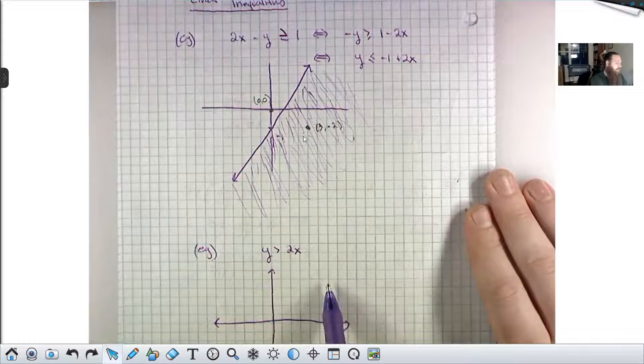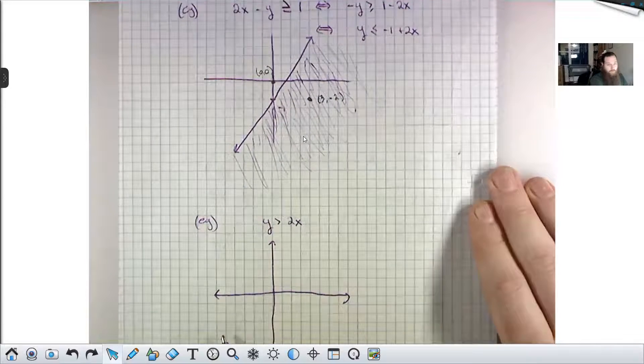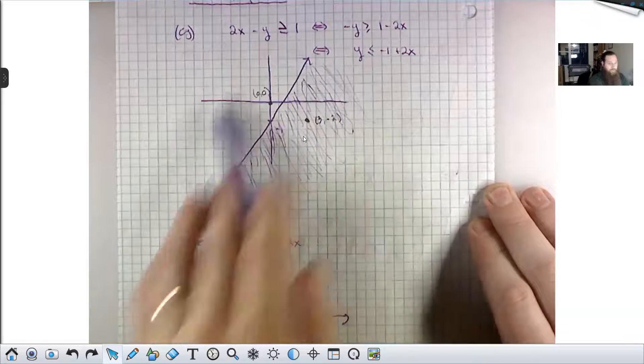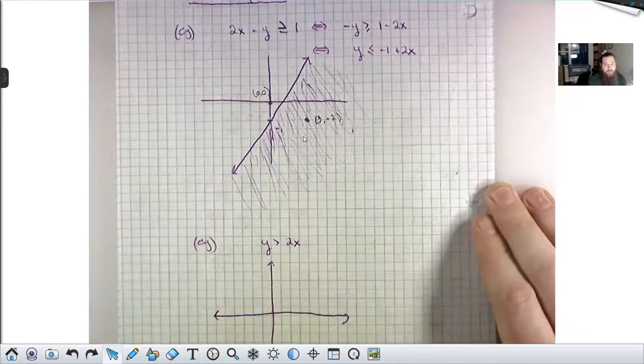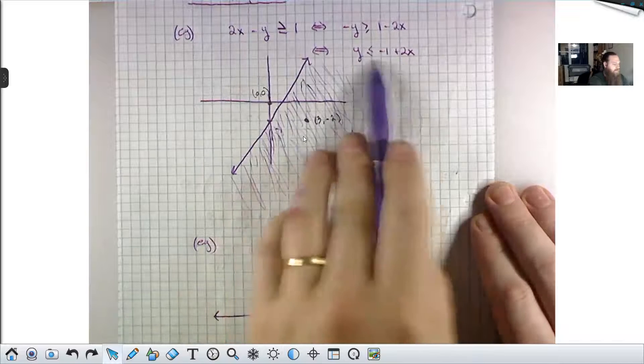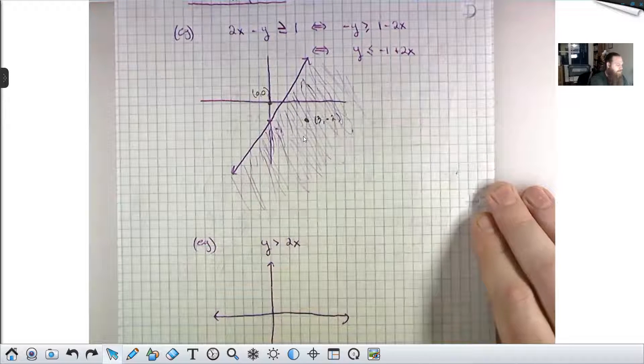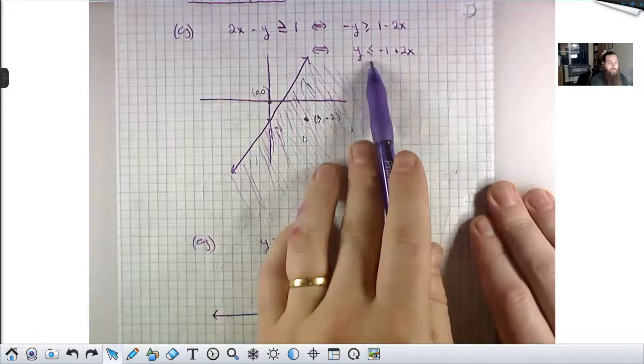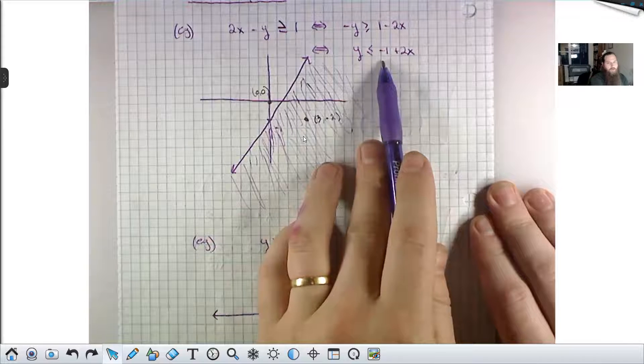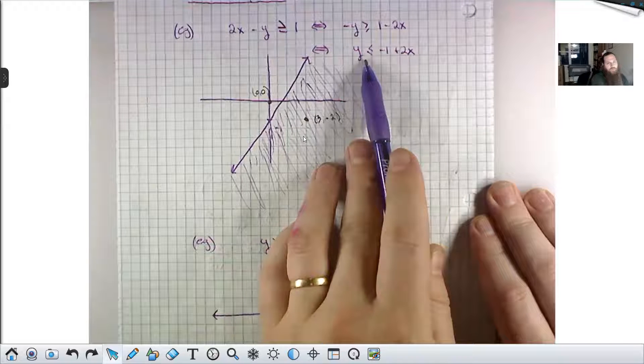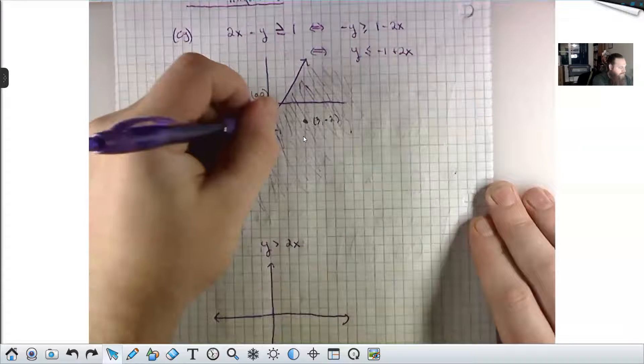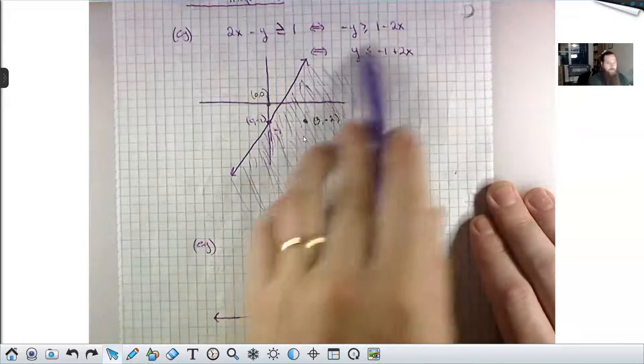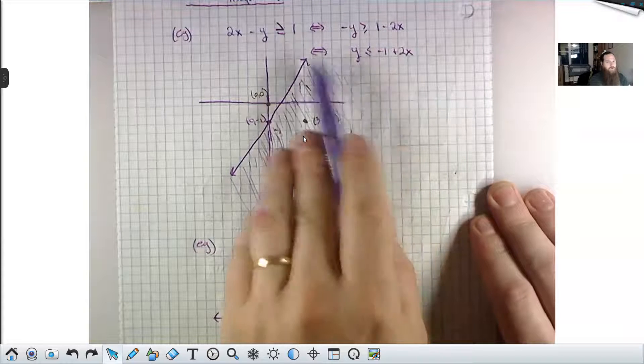What that means is if you take a point that's exactly on the line, that's actually not a part of the solution. Over here, we had a greater than or equal to, I drew the line solid, because the points that are on the line are actually a part of the solution. If you take a point that's on this line, negative 1 equals negative 1 plus 2x, you'll get a true statement here. For example, if I take x equal to 0, then this says y is less than or equal to negative 1. So x is 0, you can take y to be negative 1, and you get a true statement. Points that are on the line here solve. That's because we have a less than or equal to. So we draw the line solid.